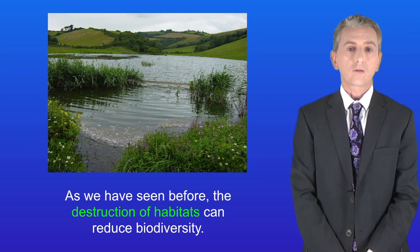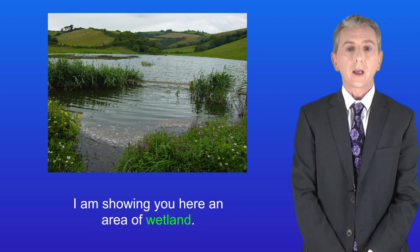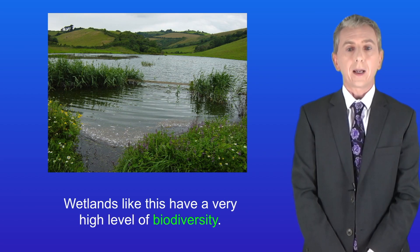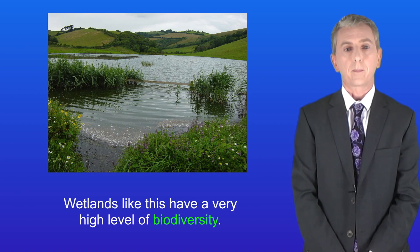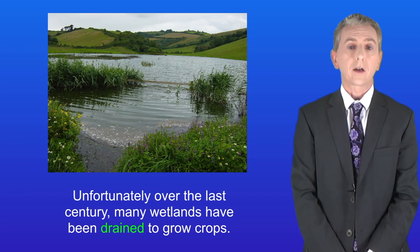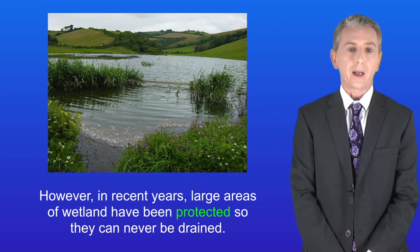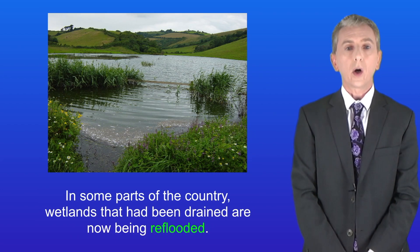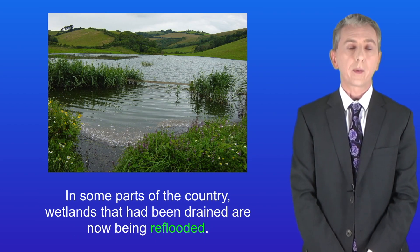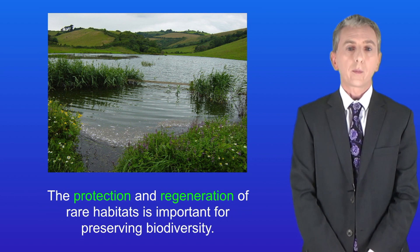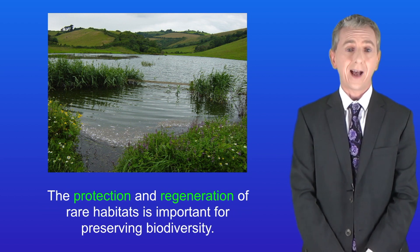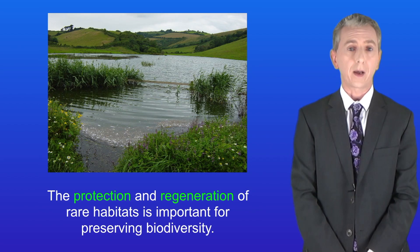As we've seen before, the destruction of habitats can reduce biodiversity. I'm showing you here an area of wetland. Wetlands like this have a very high level of biodiversity. Unfortunately, over the last century many wetlands have been drained to grow crops. However, in recent years large areas of wetland have been protected so they can never be drained, and in some parts of the country wetlands that had been drained are now being reflooded. So the protection and regeneration of rare habitats is important for preserving biodiversity.